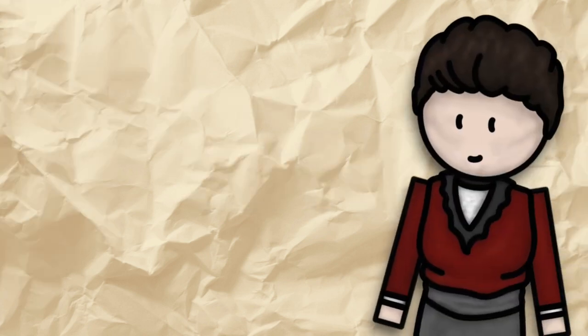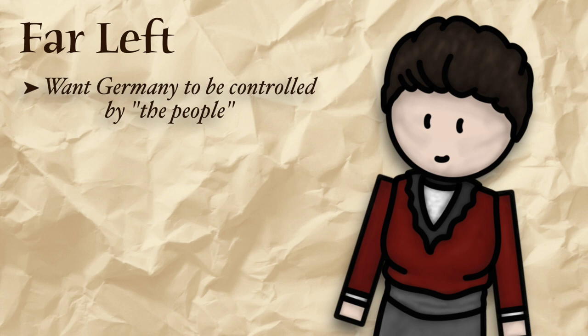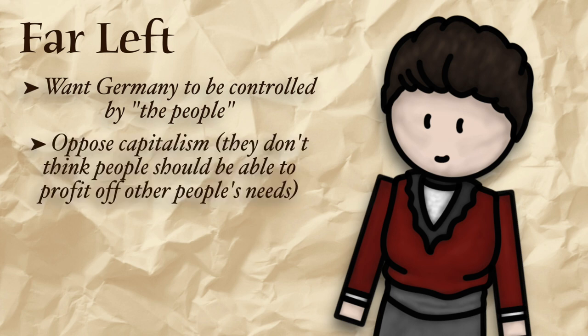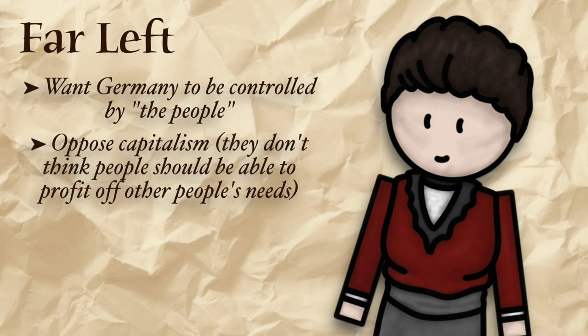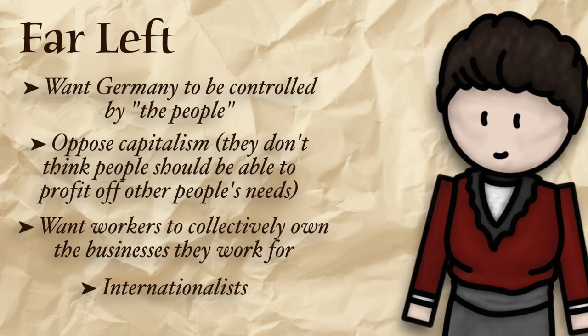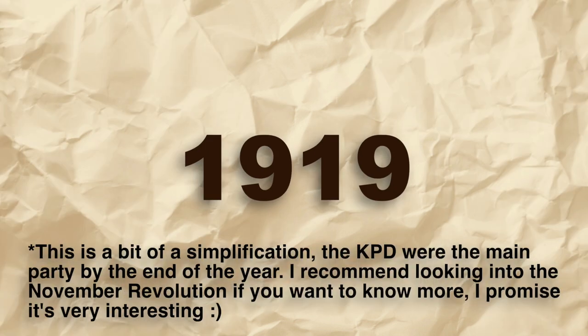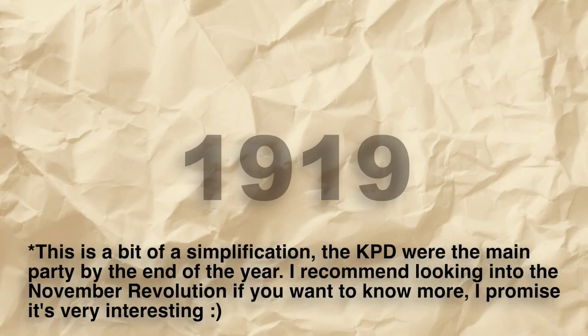On the other hand, the radical left want Germany to be controlled by the people, not some government who has just decided themselves that they are in charge. They oppose capitalism, thinking people shouldn't be able to profit off other people's fundamental needs, and want workers to collectively own the businesses they work for. They are internationalists who value cooperation between countries over individual national independence. In 1919, the main radical left party is the KPD.